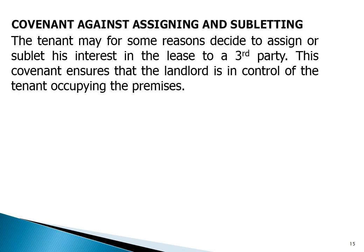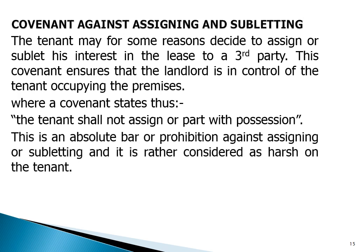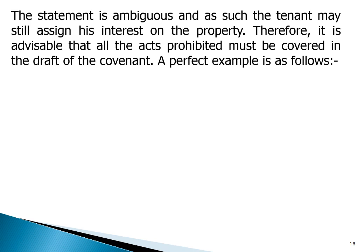Covenant against assigning and subletting: the tenant may for some reasons decide to assign or sublet his interest in the lease to a third party. This covenant ensures that the landlord is in control of the tenant occupying the premises. Where a covenant states the tenant shall not assign or part with possession, this is an absolute bar or prohibition against assigning or subletting. The statement is considered harsh on the tenant, and the tenant may still assign his interest; therefore, it is advisable that all acts prohibited must be covered in the draft of the covenant.